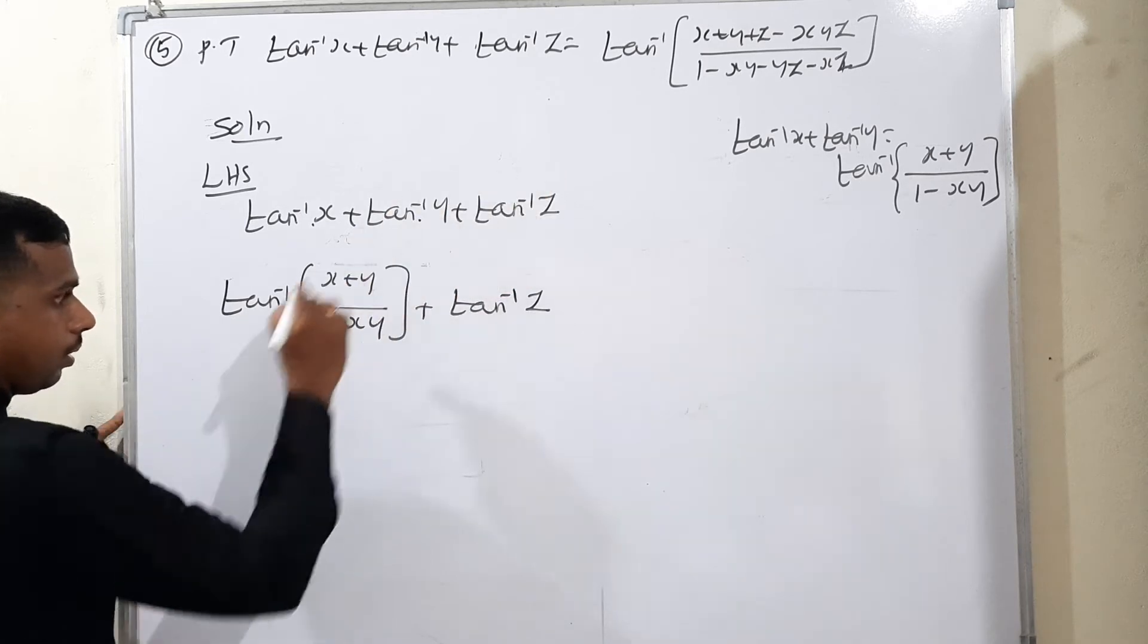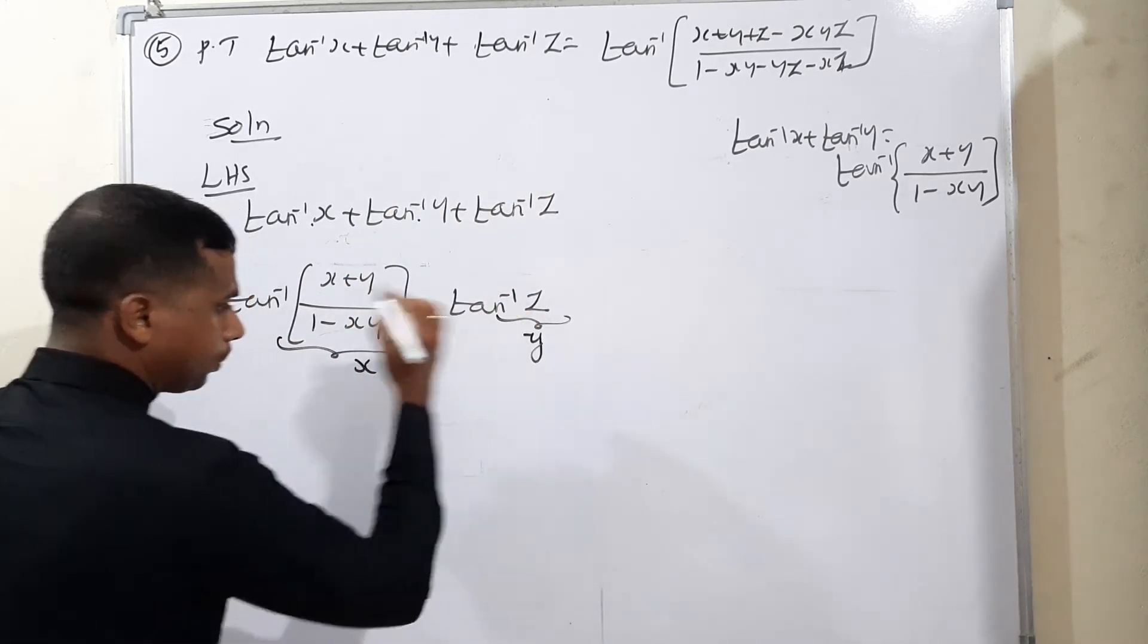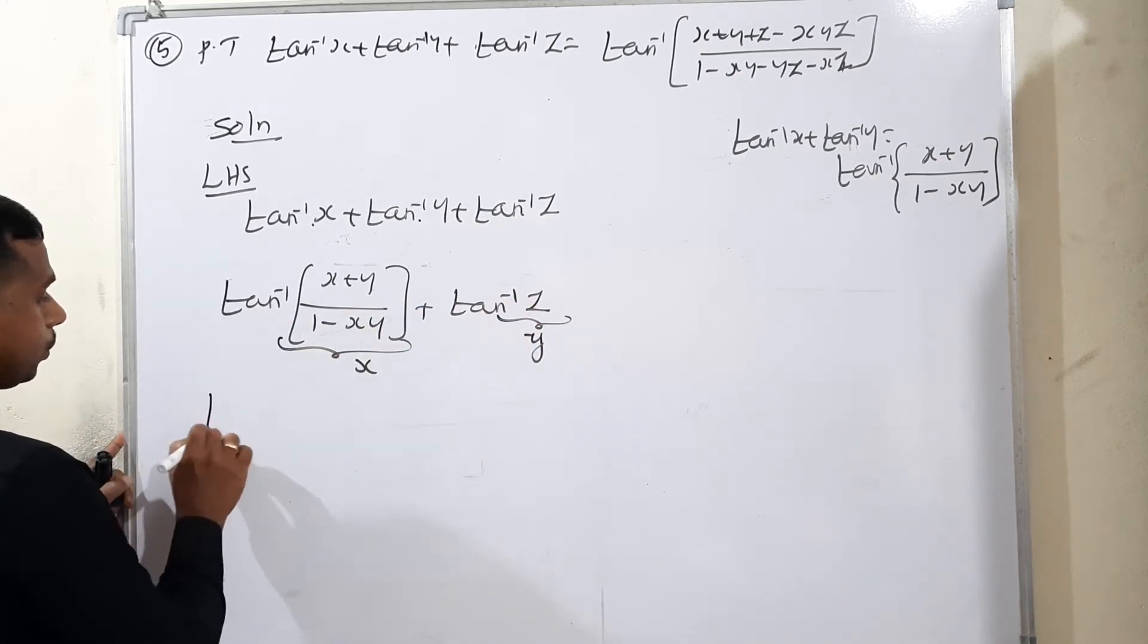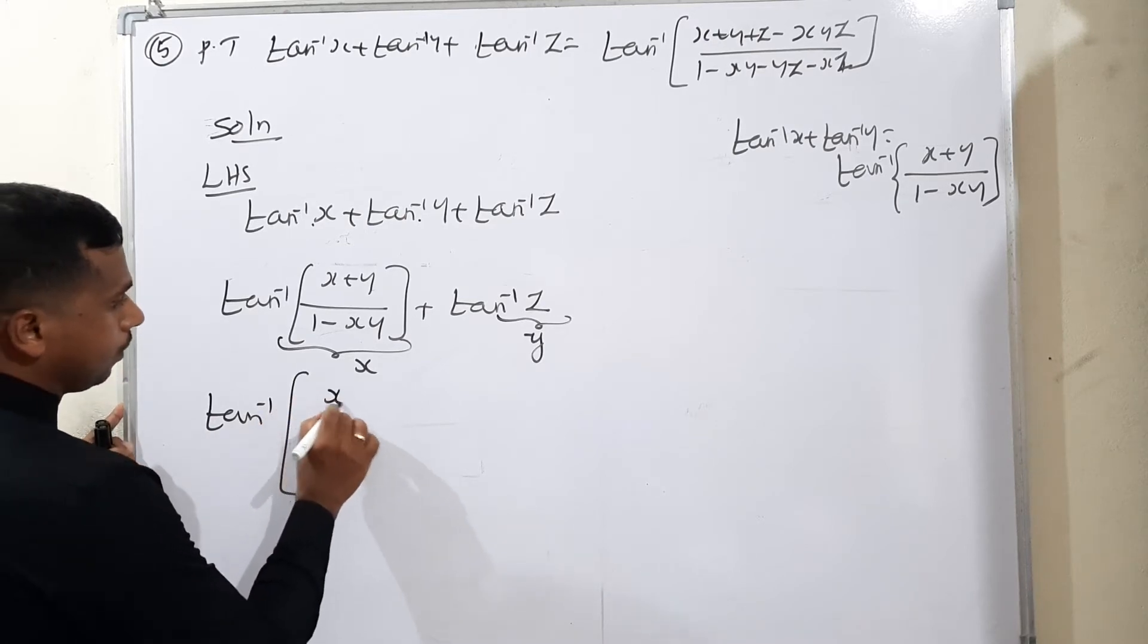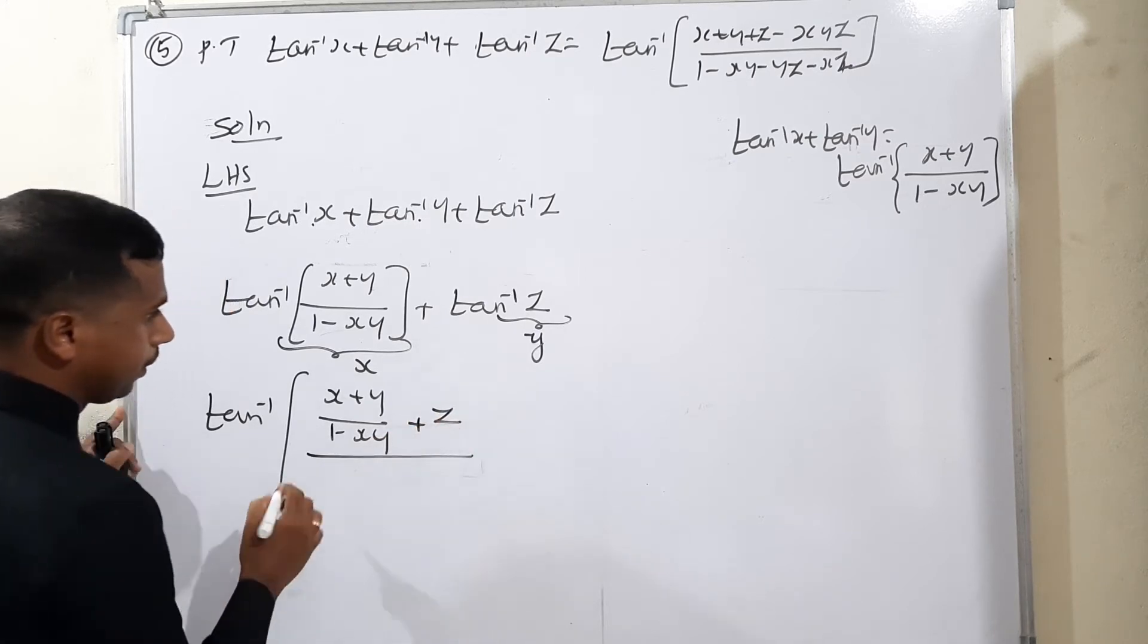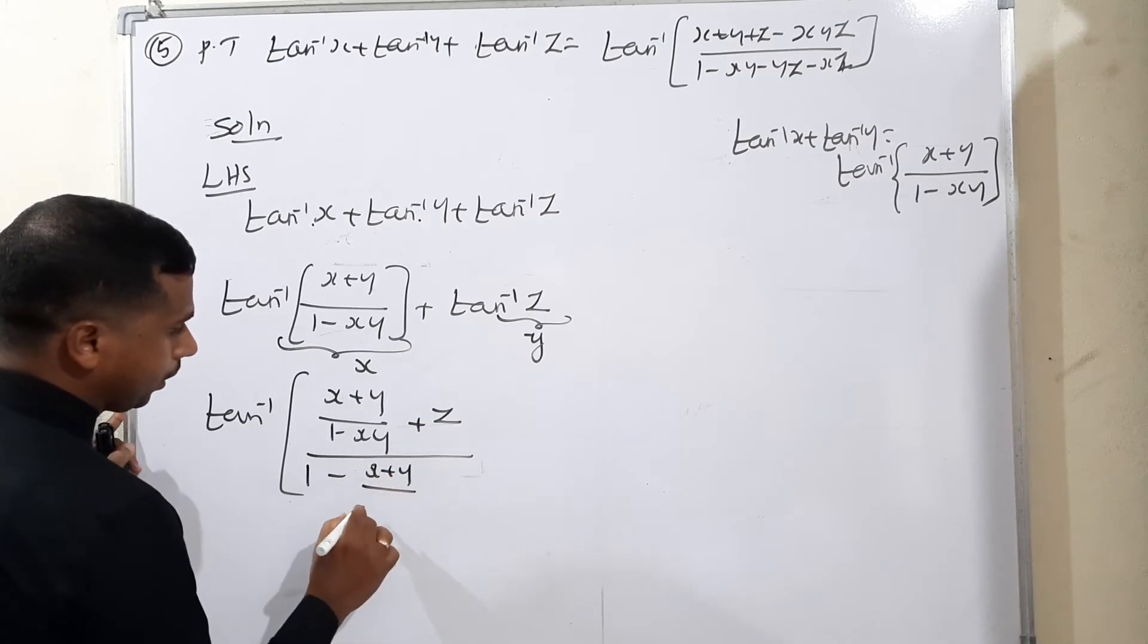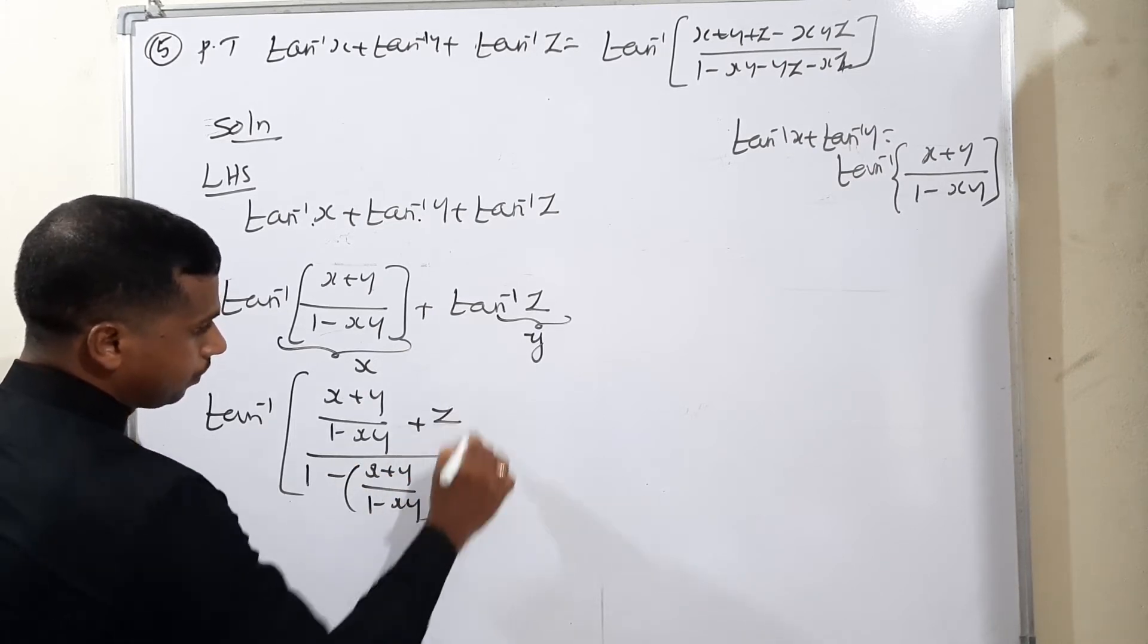Again the same formula. The whole term consider for x, single z consider y. Again tan inverse x plus tan inverse y means tan inverse of x plus y divided by 1 minus xy into z.